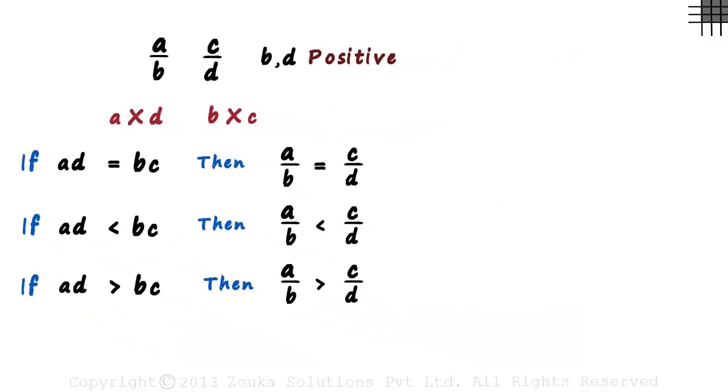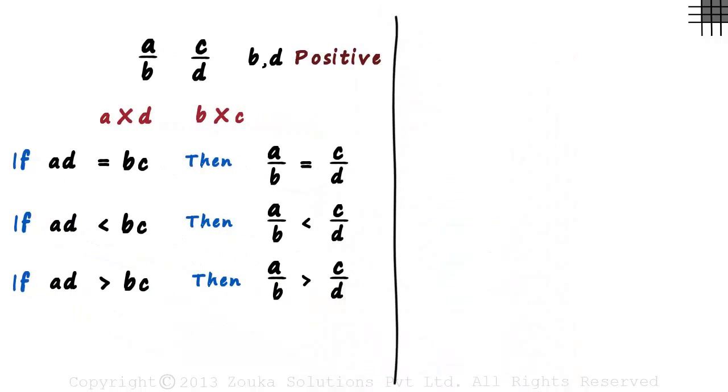Let's look at an example we saw a while back. We had to compare 6 by 7 and 16 by 19. So to compare these two rational numbers, all we need to do is compare the product of this integer with this one, with the product of this integer with this one.